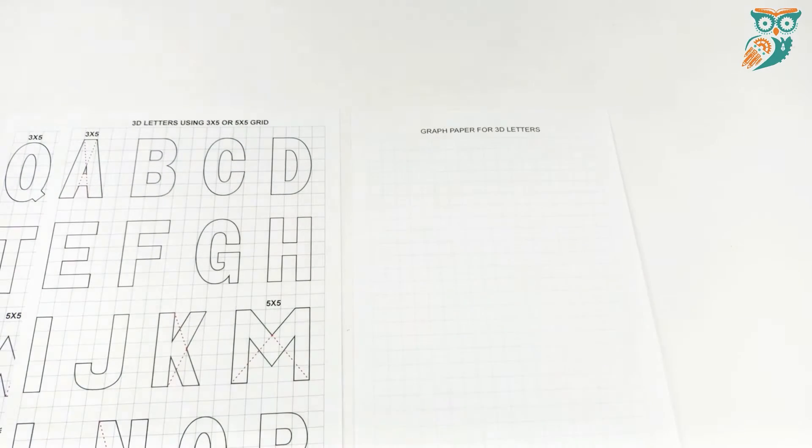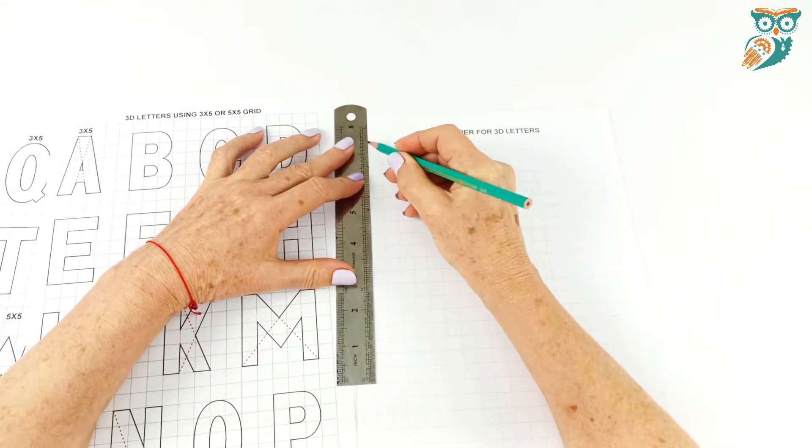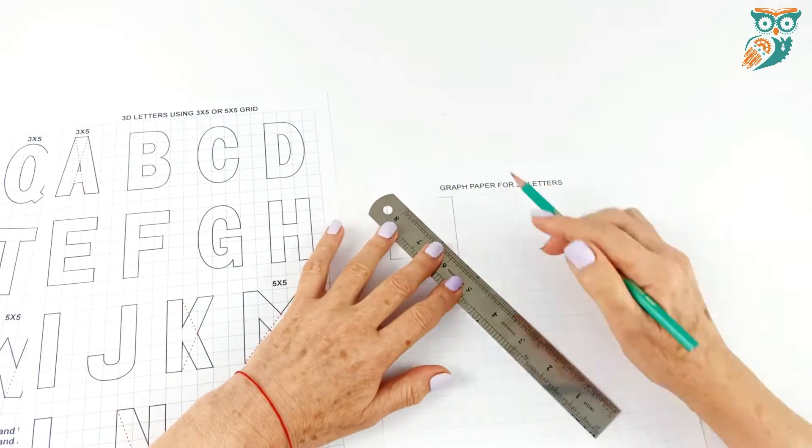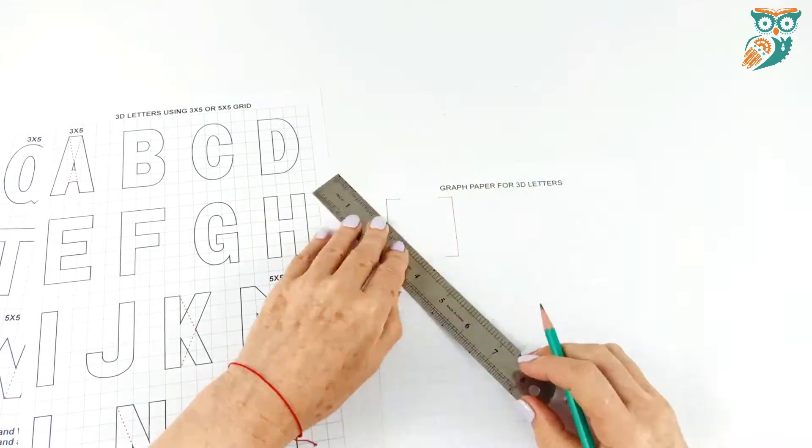And we do include some grid paper in there for creating your letters. So then you can just go and practice. You can create any word you want. Here Merle has decided to use her name.